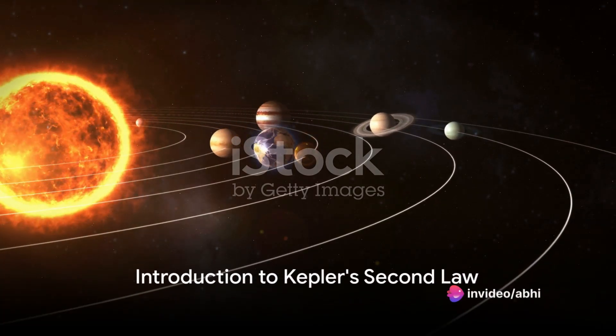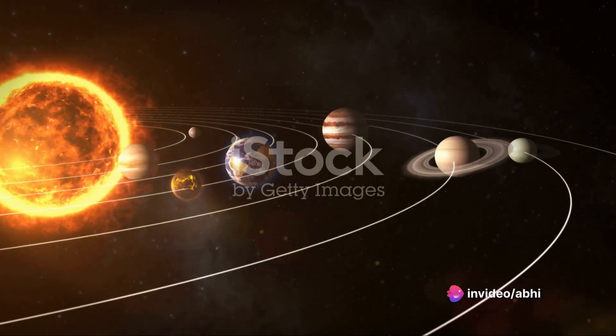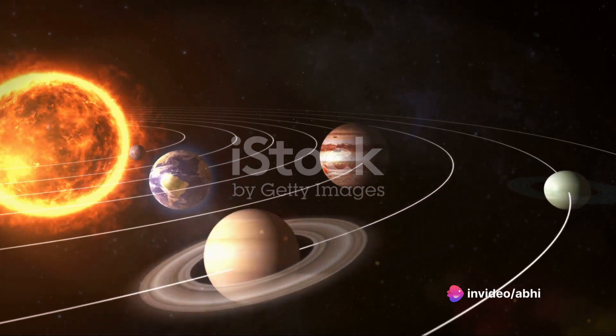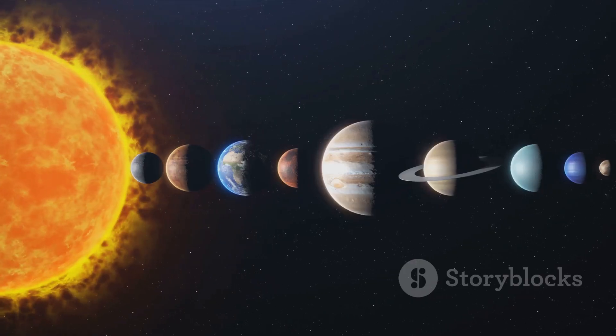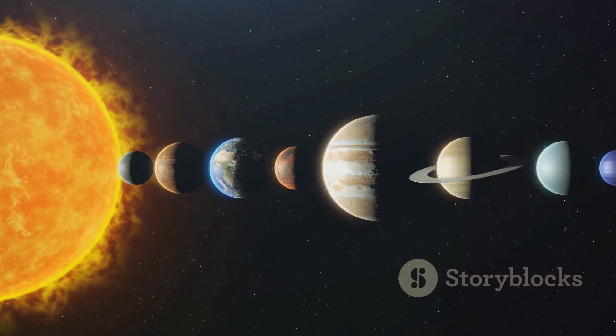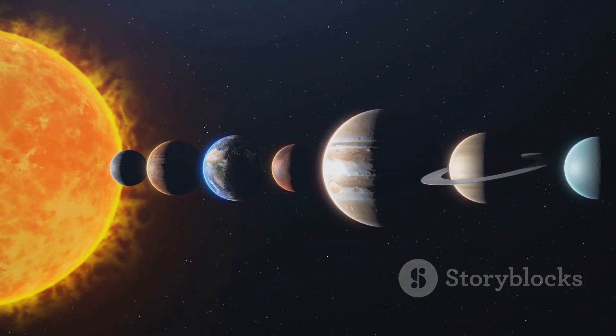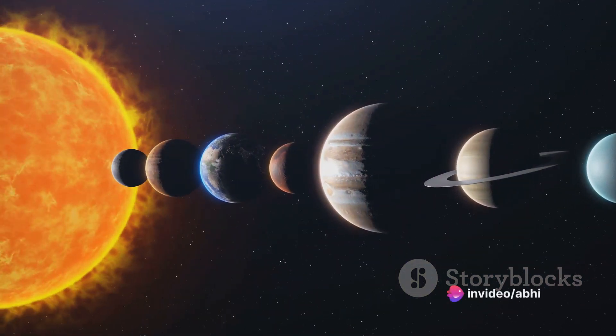Ever pondered why planets orbit more rapidly when they're snuggled near the Sun? This intriguing occurrence is far from random. It's an elaborate tenet of astronomical physics, painstakingly clarified by Johannes Kepler, a famed astronomer of the 17th century.